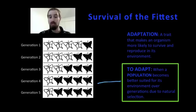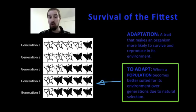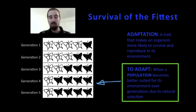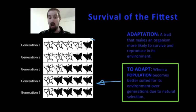Over time, the population of peppered moths was able to adapt to its new soot-covered environment, meaning that the population became better suited for living in this environment. It's important to note, however, that individual moths were not changing color from white to black — moths are no more able to change their coloration than we are to change our eye color or skin color. They don't adapt just because they want to, or because they need to, or because some random mutation came along at just the right time and gave these moths exactly what they needed to survive.